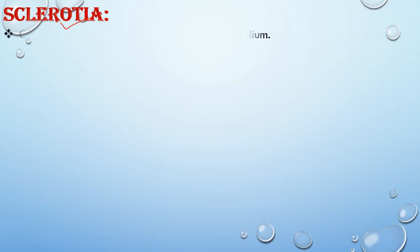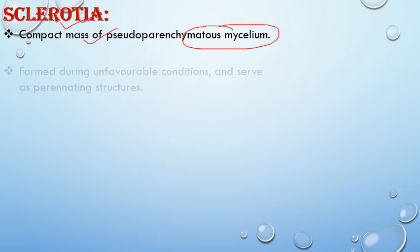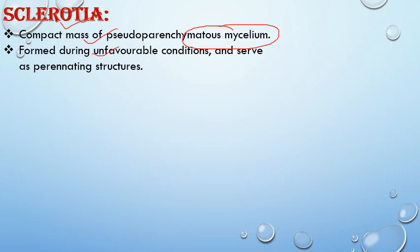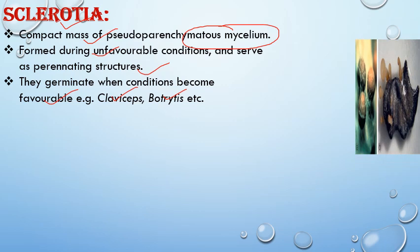The next structures are sclerotia, formed under tough environmental conditions when conditions are not favorable. These are a compact mass of pseudoparenchymatous mycelium, dark in color, formed during unfavorable conditions. They act as perennating structures that help survive harsh conditions. On the return of favorable seasons, they germinate and give rise to a new fungal body. This method is most common in Claviceps purpurea and Botrytis.